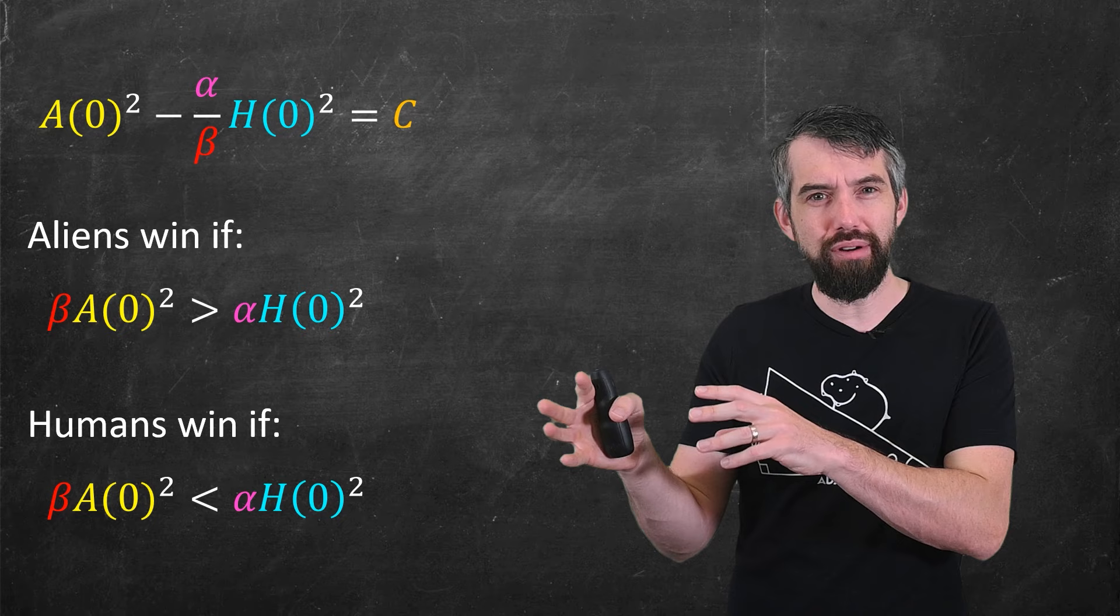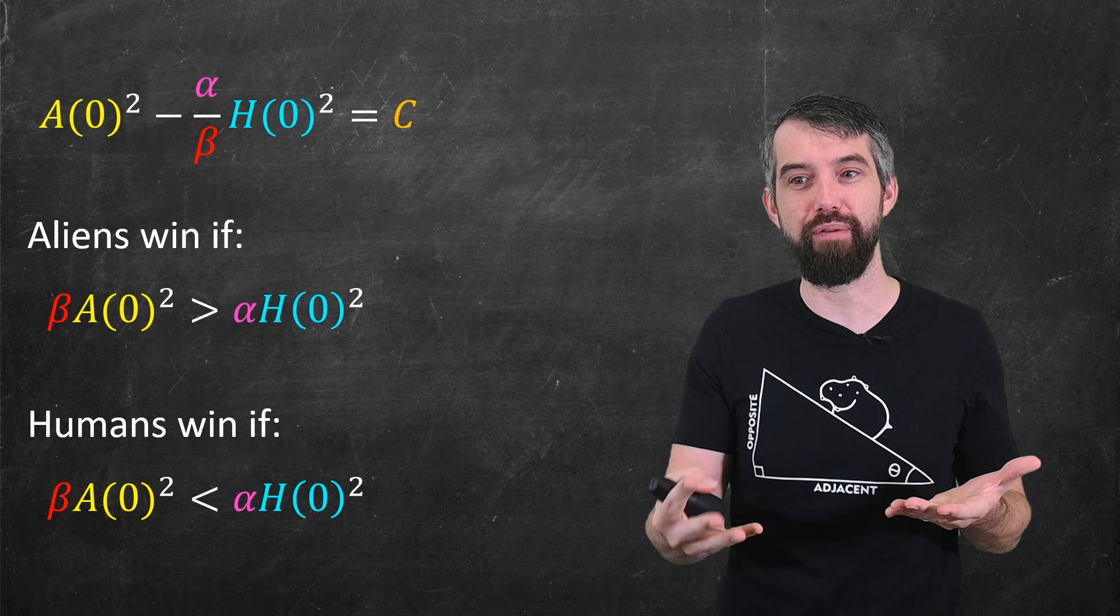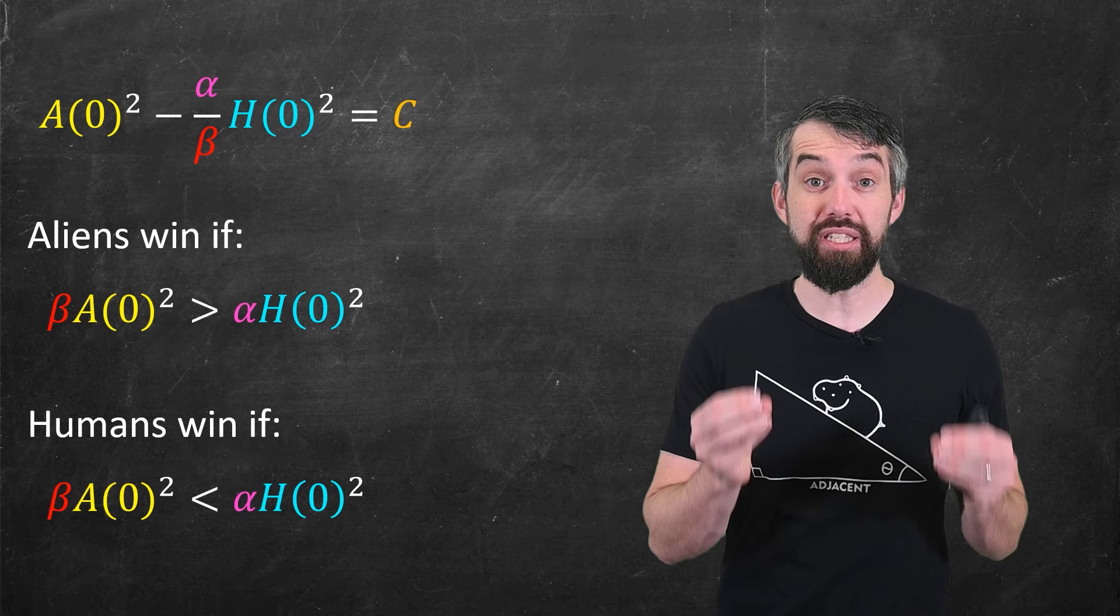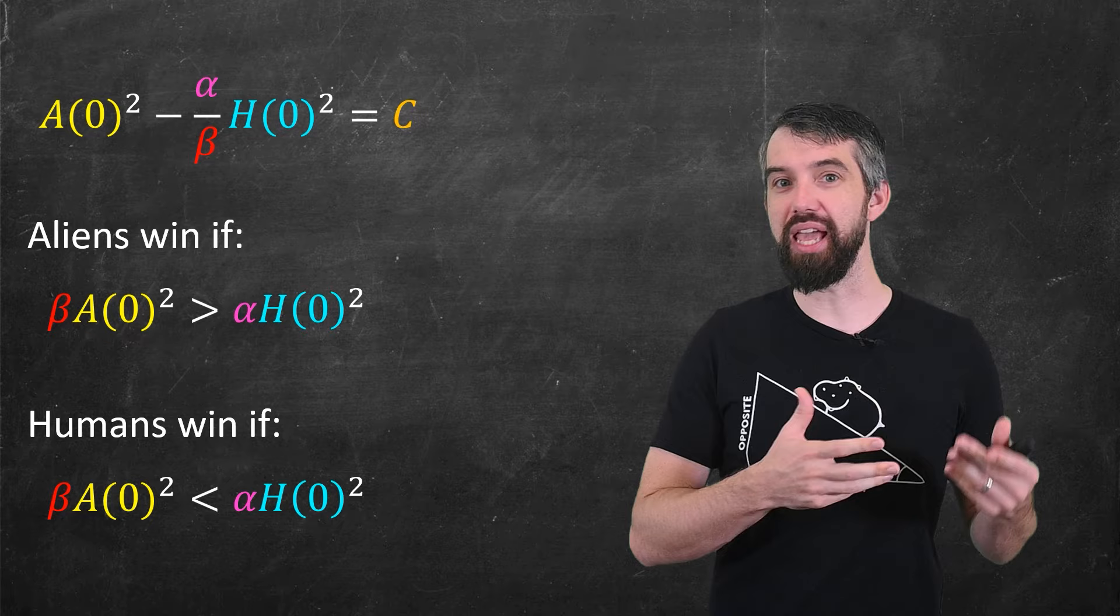It's this measure of sort of fighting power, which is the constant times the square of the population, beta times A naught squared or alpha times H naught squared. This phenomenon is often called the Lanchester square collapse. And as you see here, it's the A of zero squared and the H of zero squared. It is a square law.